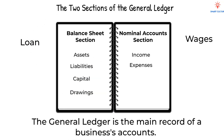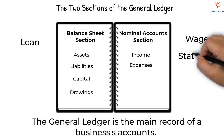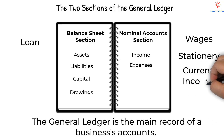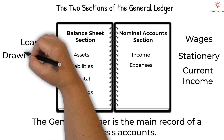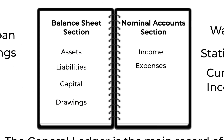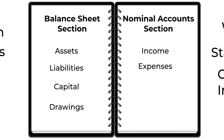Stationery is an expense and goes into the nominal section. Current income is income and also goes into the nominal section. Drawings goes into the balance sheet section.